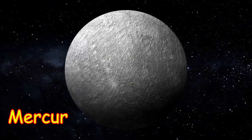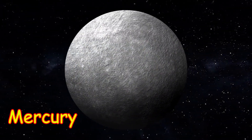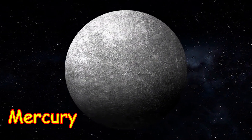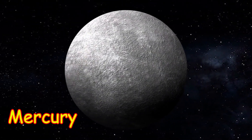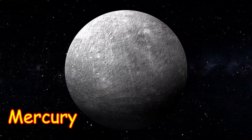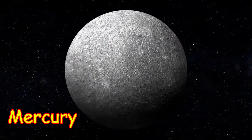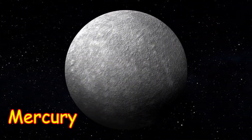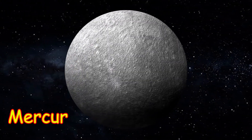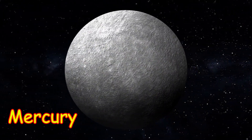Mercury, the innermost planet of the solar system and the eighth in size and mass. Its closeness to the sun and its smallness make it the most elusive of the planets visible to the unaided eye. Because its rising or setting is always within about 2 hours of the sun's, it is never observable when the sky is fully dark.